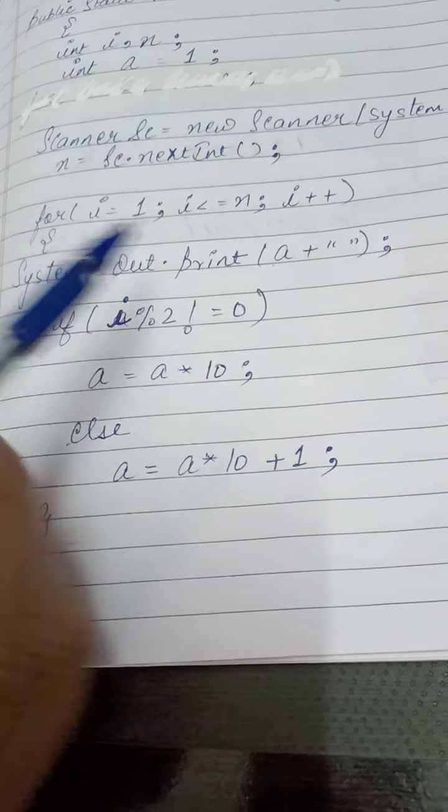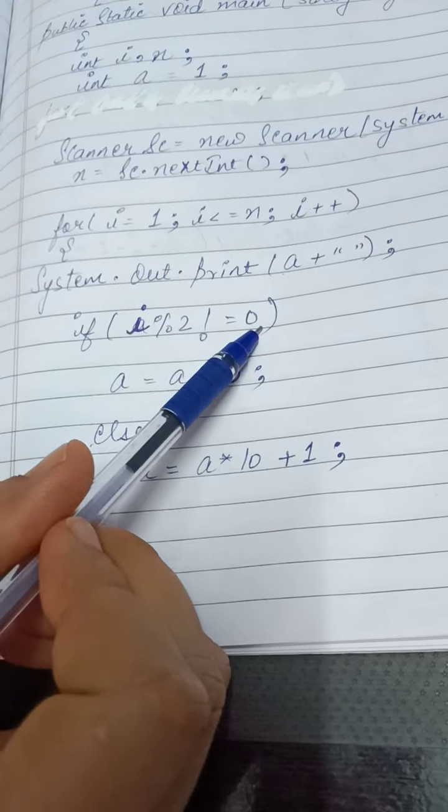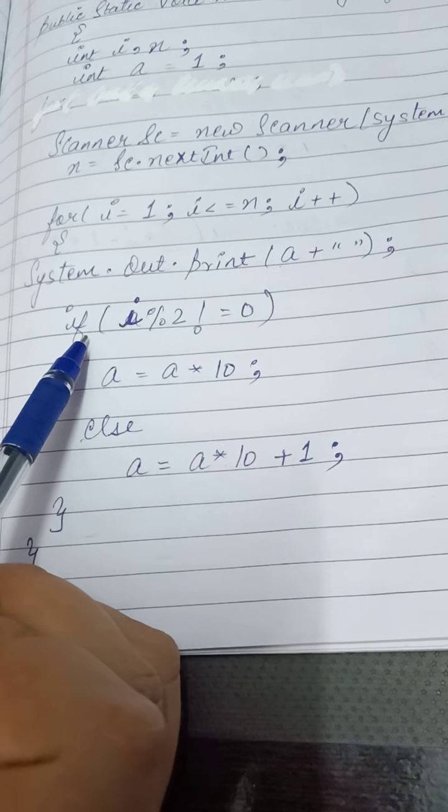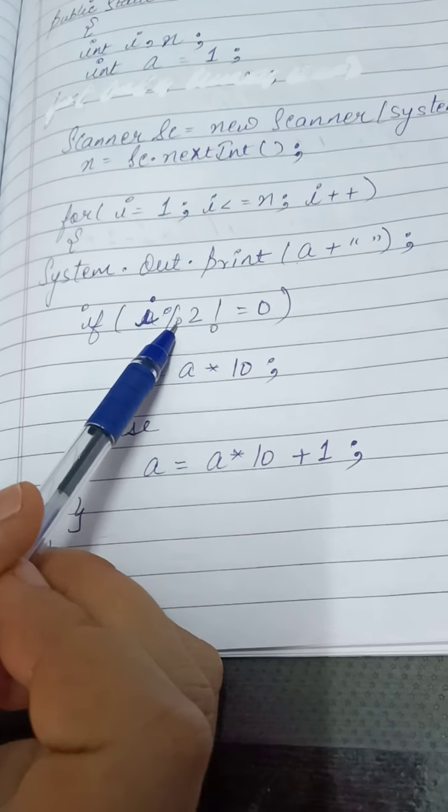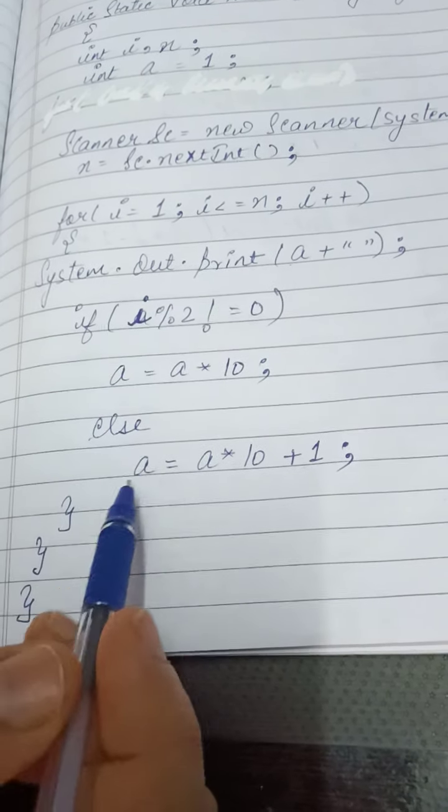So i is 4. So it will check i modulo 2 not equal to 0. That is your 4 modulo 2 not equal to 0. Condition is false. So it will go to this part.